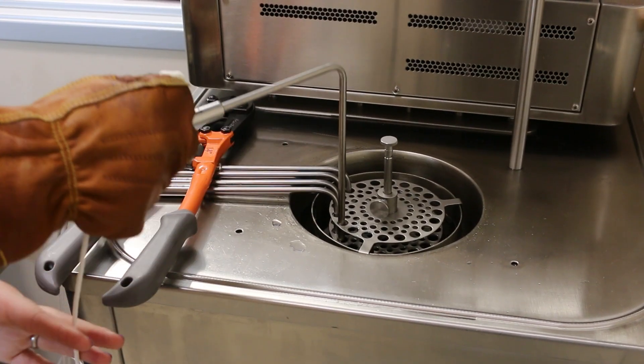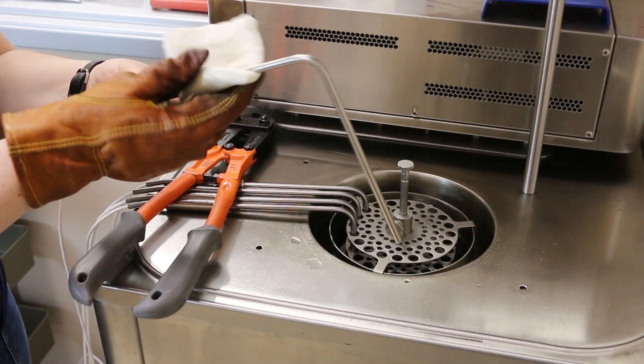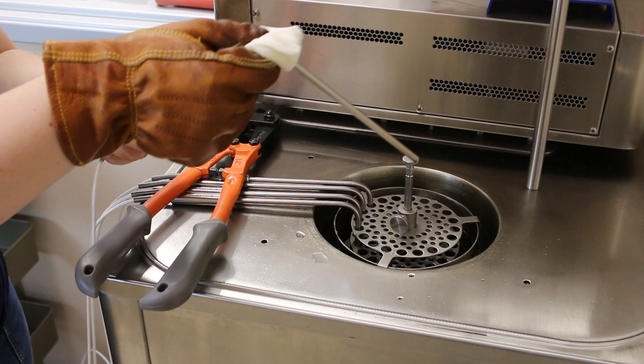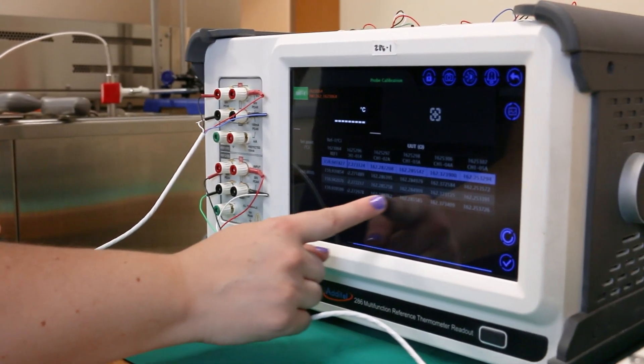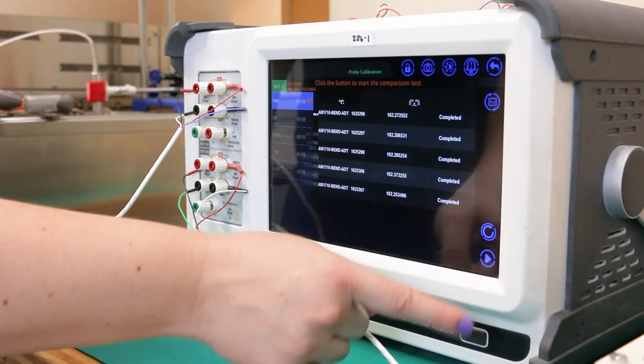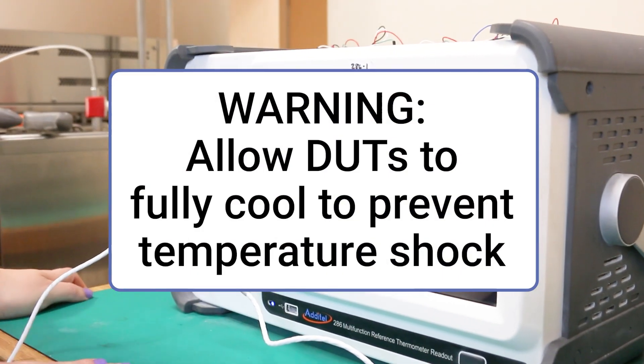After the test has completed, remove and dry off the probes, and store them where they can cool back down to room temperature. Since the next calibration point is the triple point of water with a much lower temperature than the 160 degree bath, it's important to allow the probes to fully cool before beginning new measurements.